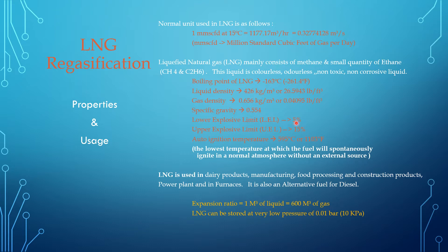The lower exposure limit of LNG or natural gas is 5%, and the upper exposure limit is 15%. The auto-ignition temperature is 595 degrees centigrade, or 1103 degrees Fahrenheit. The auto-ignition temperature is the lowest temperature at which the fuel will spontaneously ignite in a normal atmosphere without an external source. When the gas is heated to 595 degrees centigrade, it will ignite automatically without any ignition source.